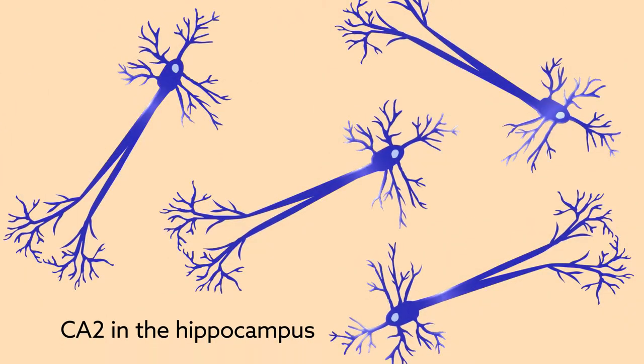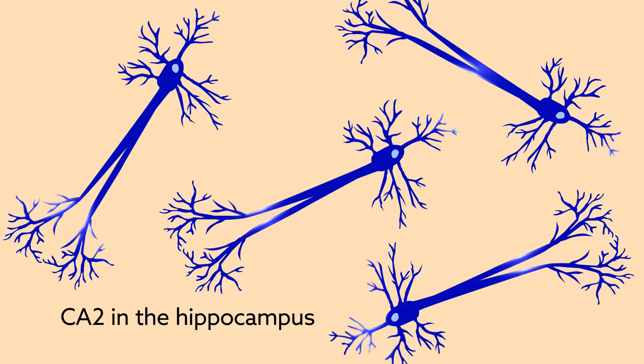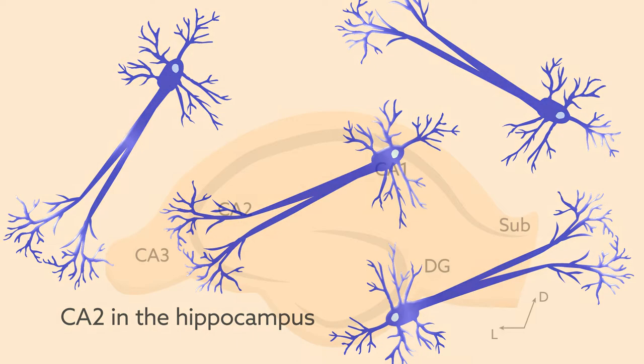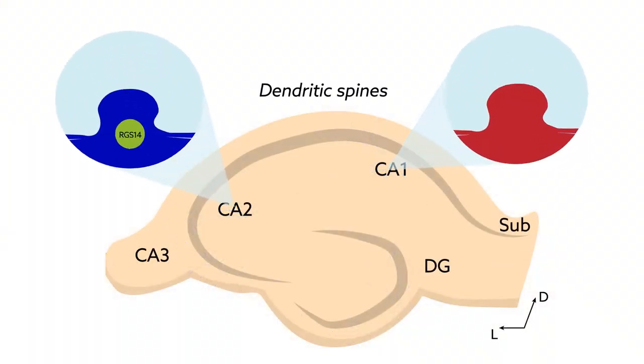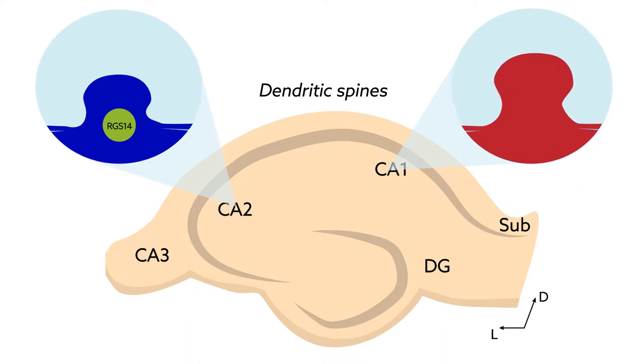Such as hippocampal region CA2, an area with a central role in the social, spatial, and temporal aspects of memory. The protein RGS14 has been shown to naturally block plasticity in CA2 neurons, but precisely how it accomplishes this has remained a mystery.